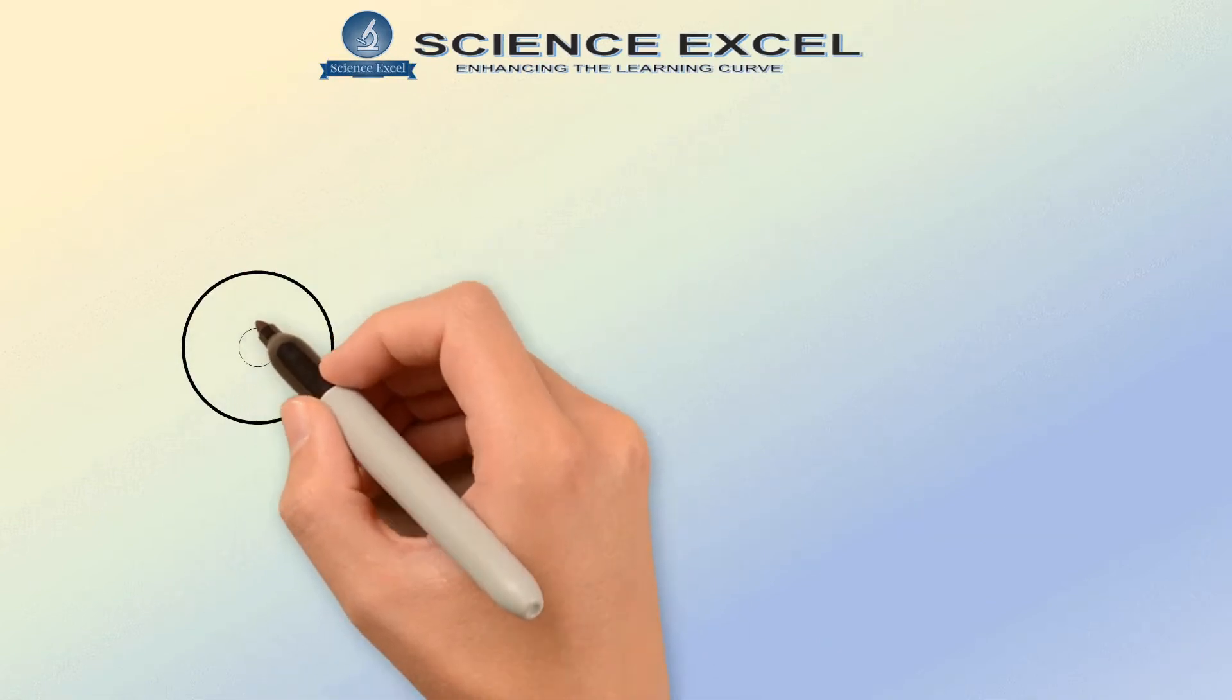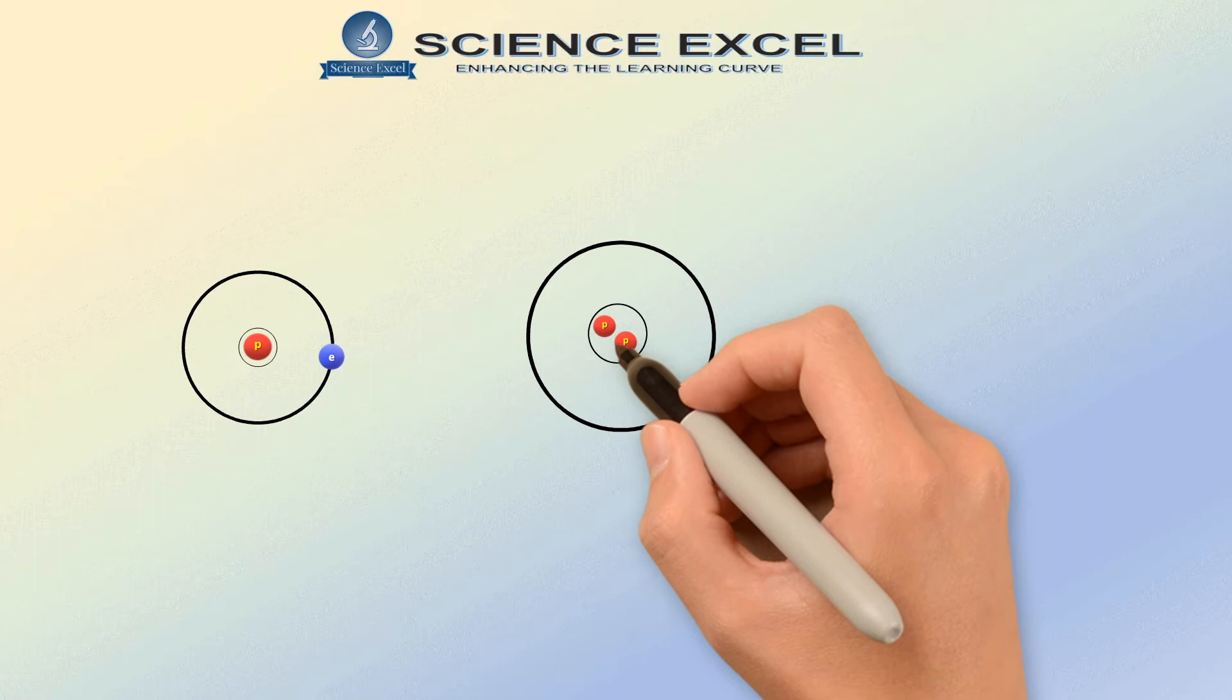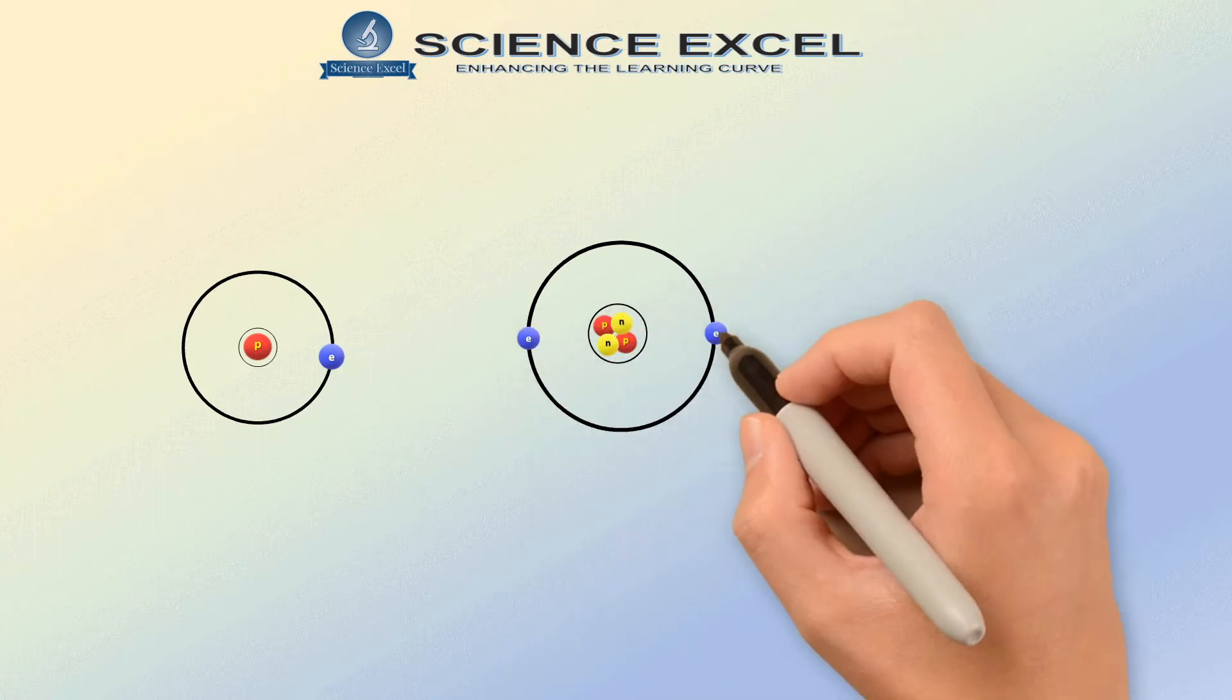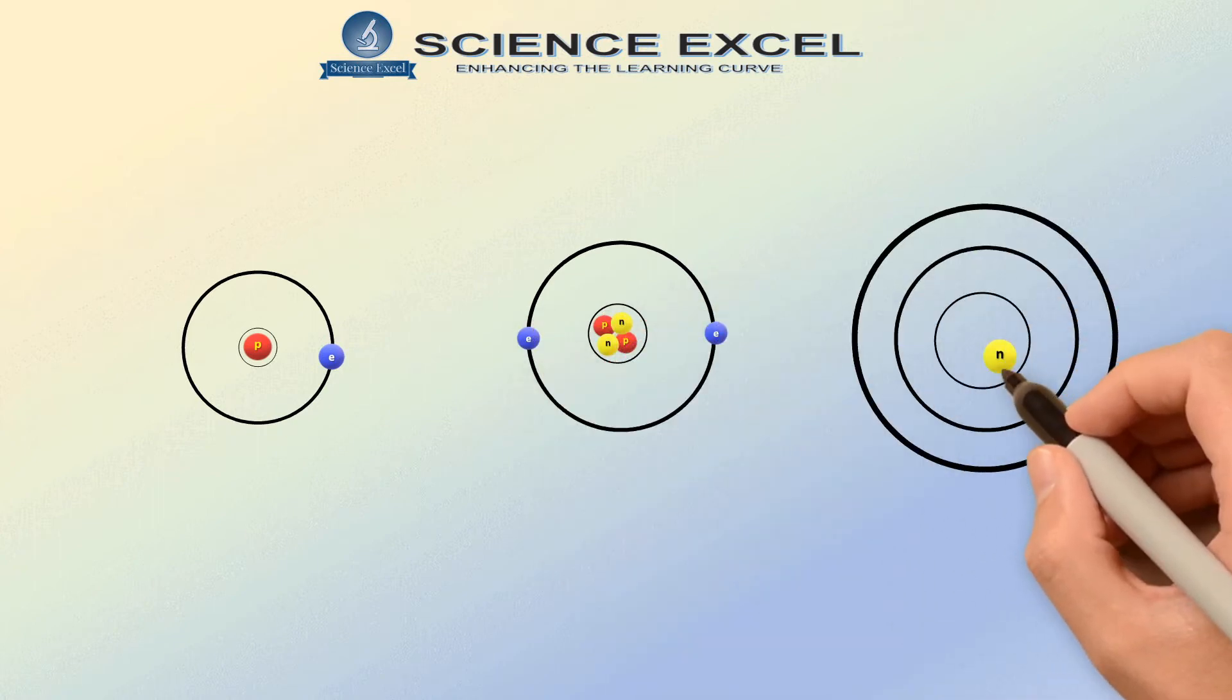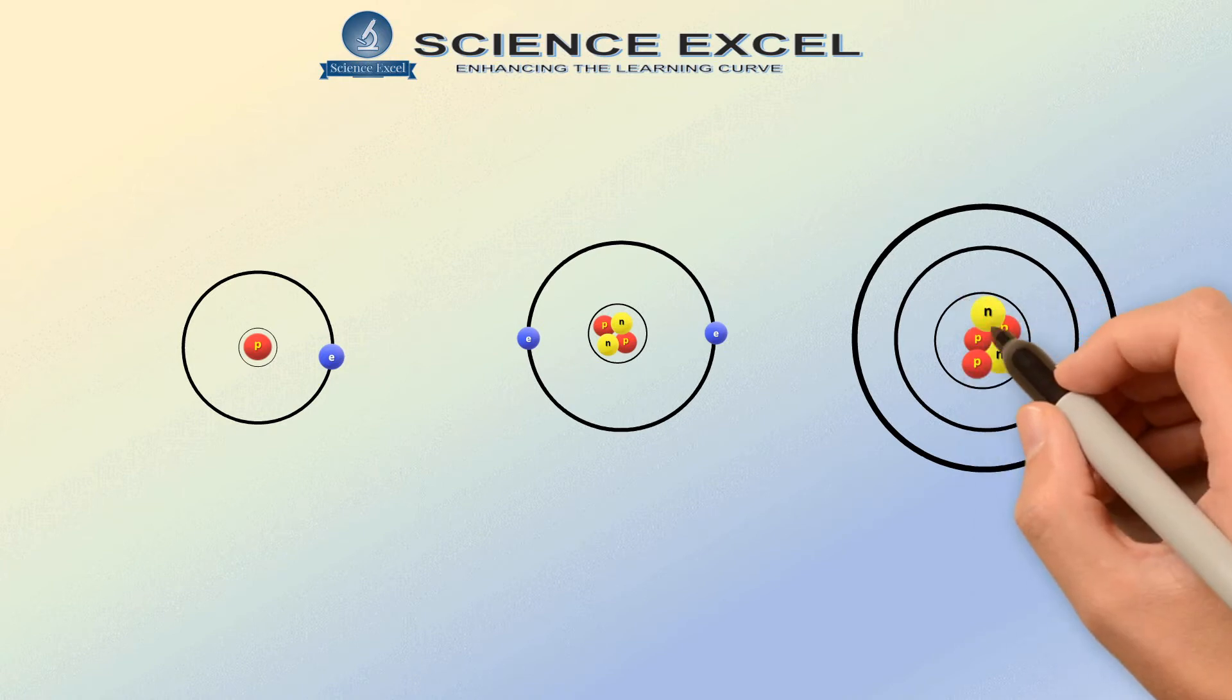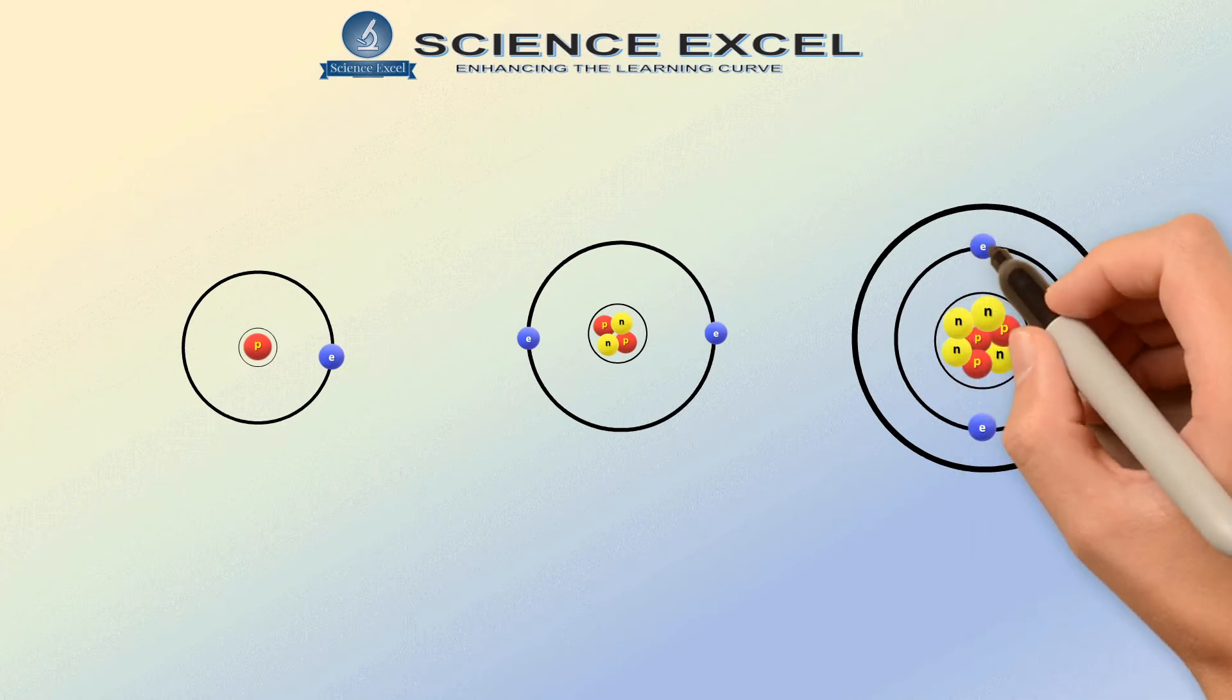So what is an atomic number? An atom of every element has fixed number of protons in its nucleus and this number is unique to every element.